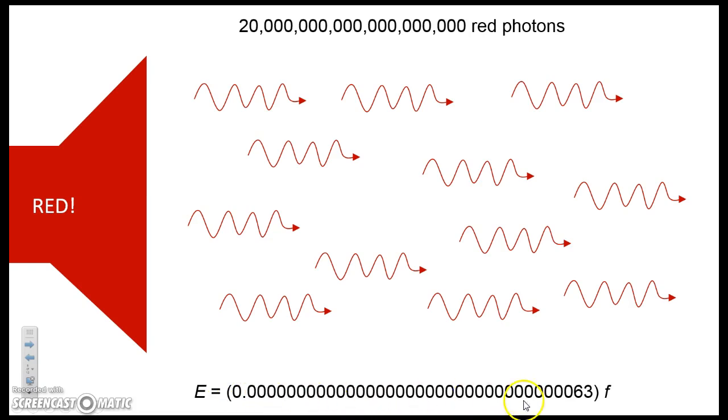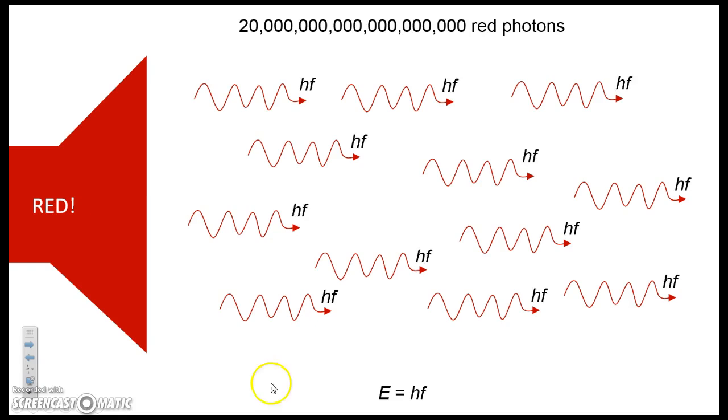Now instead of writing this tiny little number here, we simply call that value h, Planck's constant. So every single photon has an energy equal to Planck's constant times the photon's frequency.